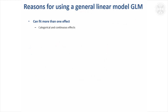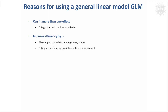Just a recap on reasons for using a general linear model, thinking of all the types of model we've looked at, which are types of general linear model. You can fit more than one effect. You can fit categorical or continuous quantitative effects. Sometimes by choosing effects carefully you can improve efficiency and allow for structure in the data — for example, if animals are in cages you can take account of cage effects, or if data are on plates you can fit a plate effect. You can also fit pre-treatment or pre-intervention measurements, like red blood cell counts, to improve efficiency.